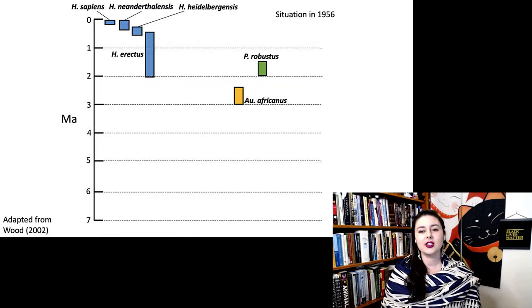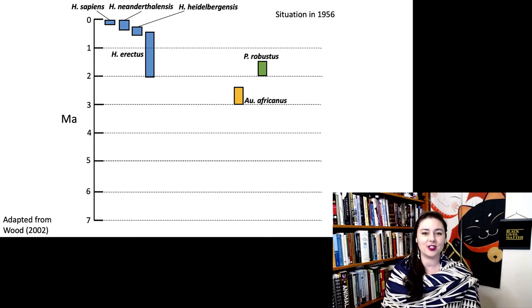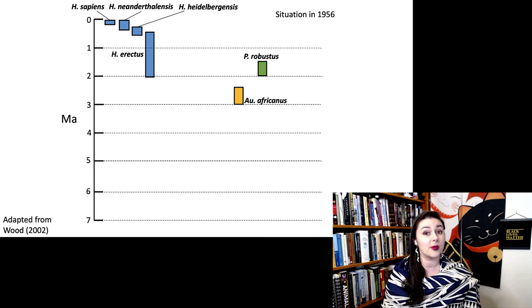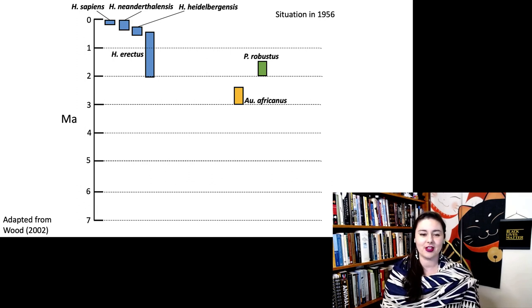But let's talk a little bit about the different fossil discoveries and how that has changed over time. So here's what things looked like in 1956. We had discovered a few species. We of course knew about ourselves, Homo sapiens. We'd known about Neanderthals for a while. We discovered some Homo heidelbergensis, a little bit older than Neanderthals, and then Homo erectus in both Africa and Asia. And then we also had a few other fossil finds. We had Australopithecus africanus in South Africa and Paranthropus robustus from South Africa as well.